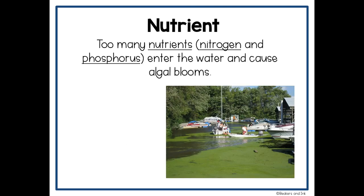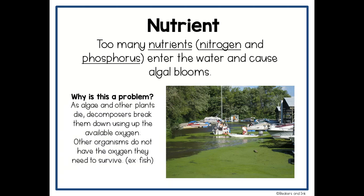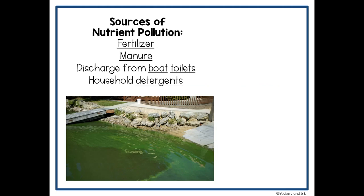The last type is nutrient pollution. Too many nutrients — usually nitrogen and phosphorus — enter the water and cause something called an algal bloom. If you look at the picture, the green on top of the water is algae, not grass. While nutrients are a great thing, too many cause the algae to grow, bloom, and overtake the water. When the algae and other plants die, decomposers break them down and use all of the available oxygen in the water, leaving none for other organisms like fish to survive. Sources of nutrient pollution include fertilizer, manure, discharge from boat toilets, and household detergents.